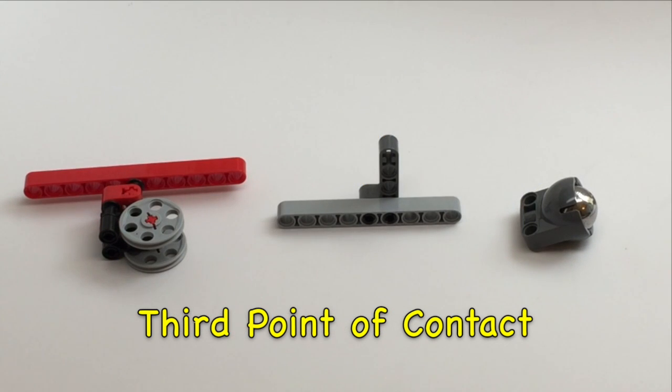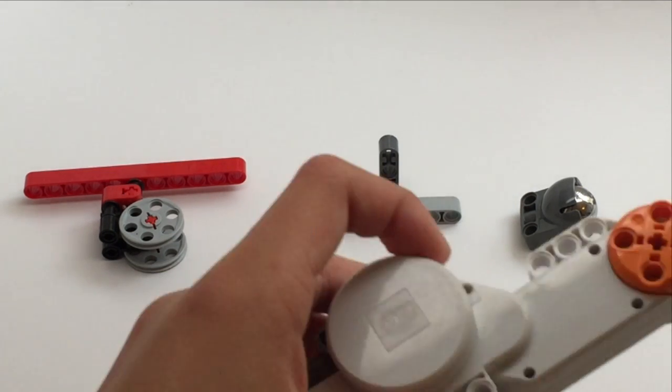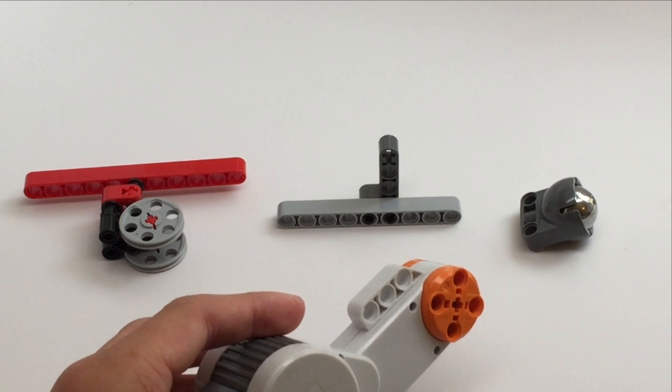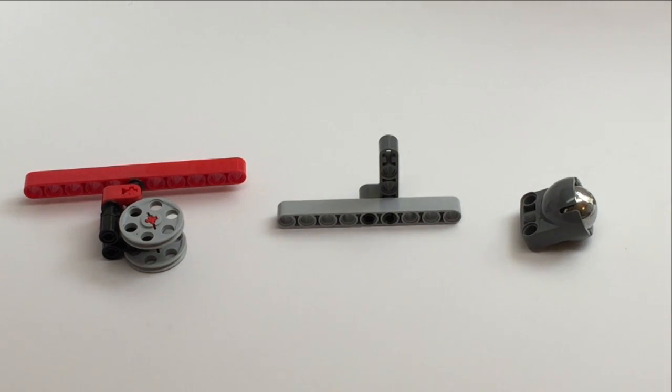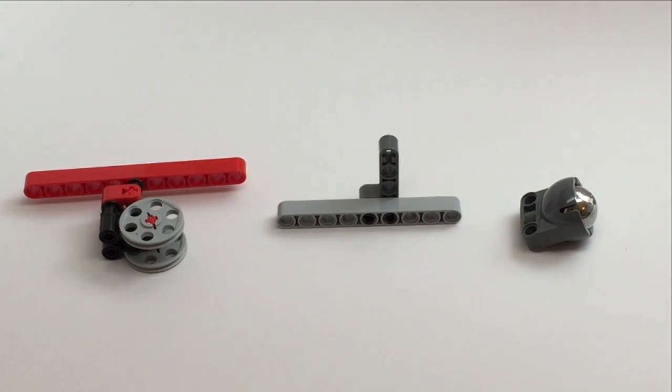By now you probably have a good understanding about driving wheels and how you only need two driving wheels connected to two of these motors to be able to turn, go forward, go backward, and maneuver your robot across the mat. But you also might realize that if you only have two wheels, you only have two points of contact with the mat, meaning you're going to tip over.